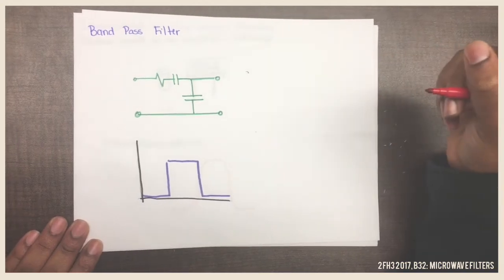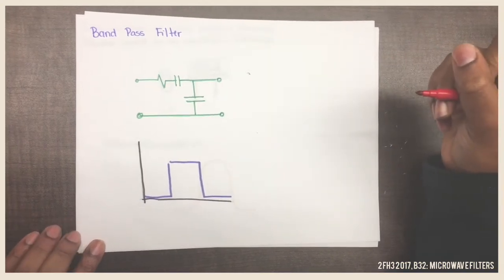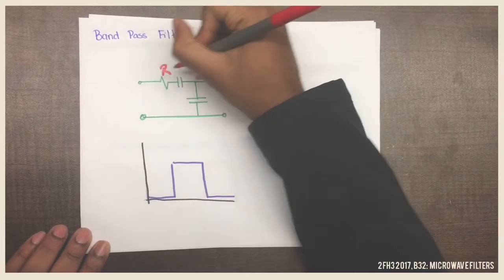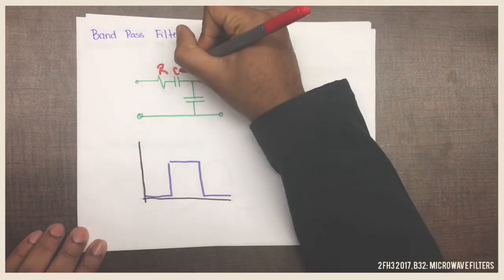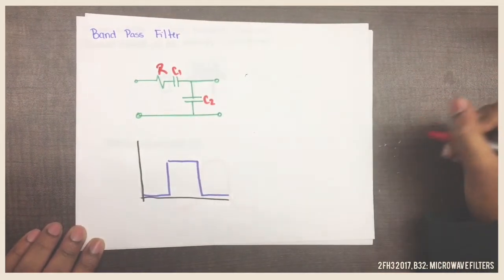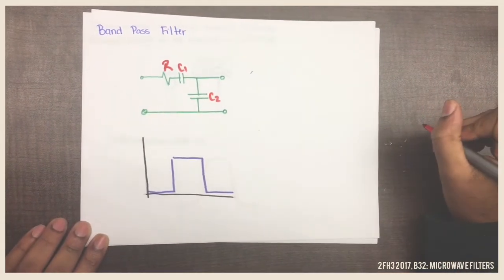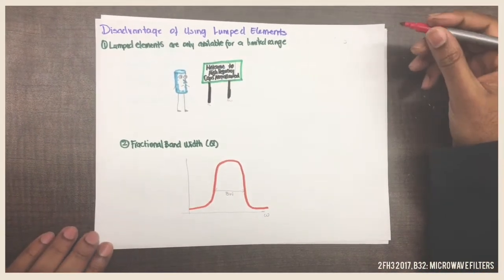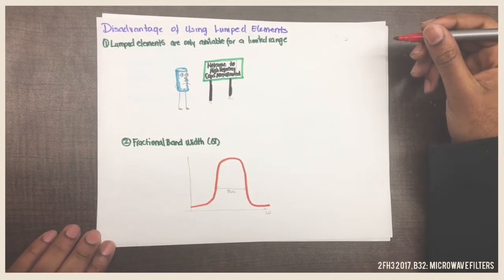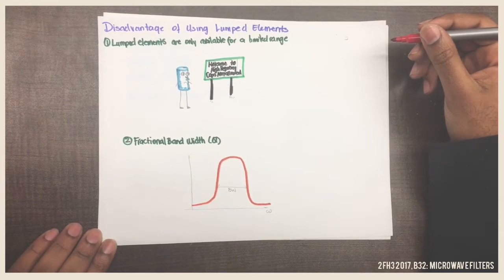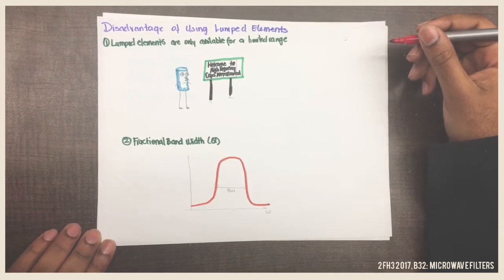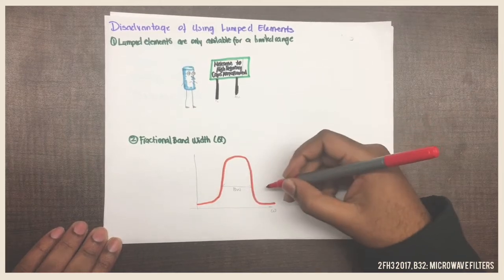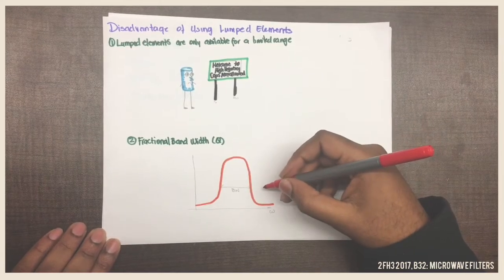Here is a basic design for a band-pass filter. It's a lumped element structure, as the components are discrete — meaning the resistor is separate from the capacitors. The disadvantages of a lumped element filter are that they only have a limited range that they work at, making it hard to design high-frequency filters. Their bandwidth is also high as their Q is low, meaning they aren't very selective.